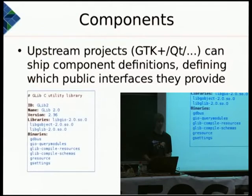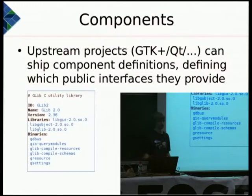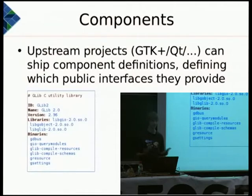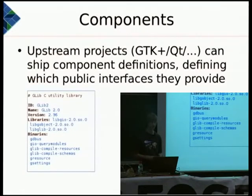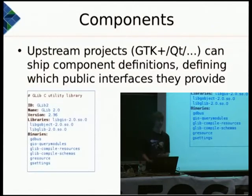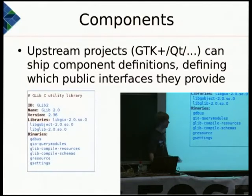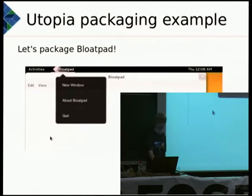It's a good idea to have at least a base level of dependencies. To resolve dependencies using the native distribution package manager across multiple distributions, Listaller relies on so-called components, which define the interfaces an upstream project provides — which binaries, which libraries, and which versions. Ideally it also ships a symbols file so ABI compatibility can be checked. The installer uses this component file to find the right dependency in the distribution database.